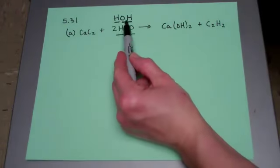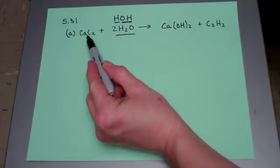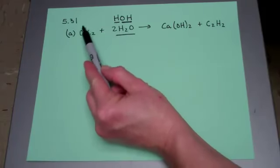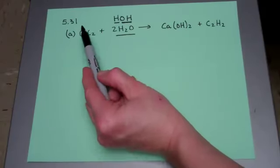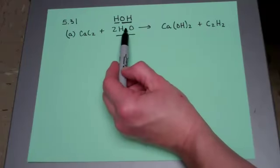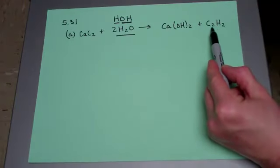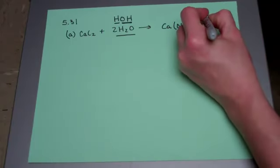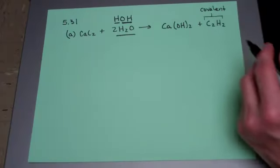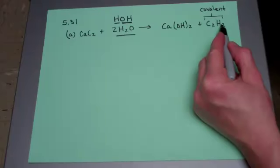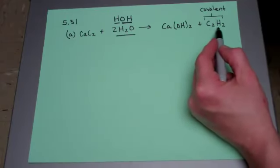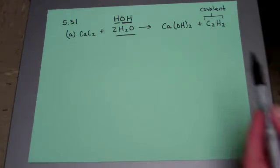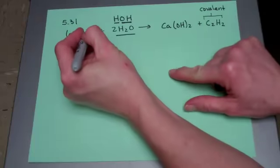If we think about water in this form, we can see the double displacement that's going to happen. The proton acting as a cation is going to change places with the calcium. The calcium goes with the hydroxide anion from the water molecule. The H's then come over with carbon, and when they bond with carbon they form covalent interactions. So the end molecule here is C₂H₂.